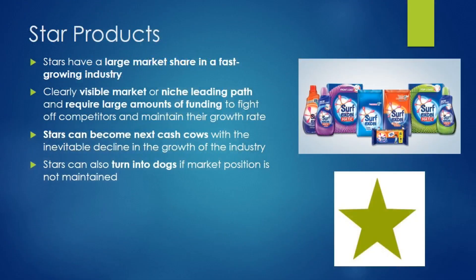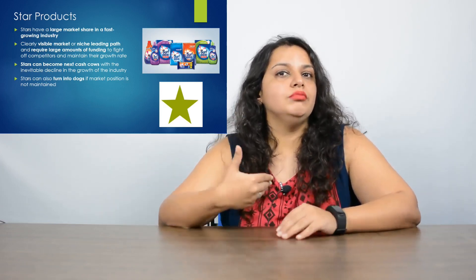Moving to star products — these are giving very positive revenue and growth to the company. Looking at HUL's product portfolio, Surf Excel is a great example. Originally launched in the 90s, it has seen tremendous growth over time and is the best performer in its category. Compared to Ariel, Rin, Nirma, or any other brand in its category, Surf Excel enjoys a superior brand image.